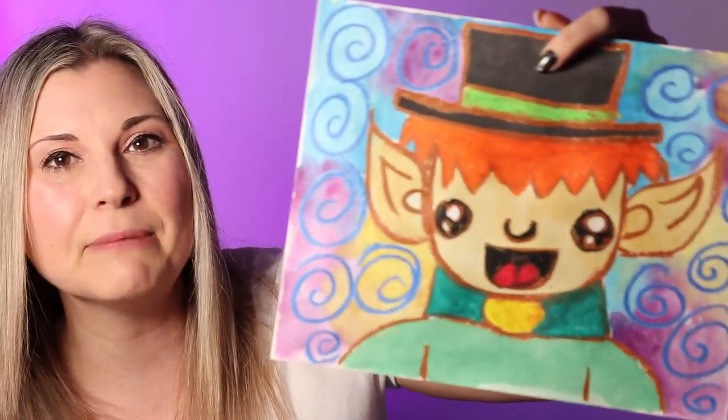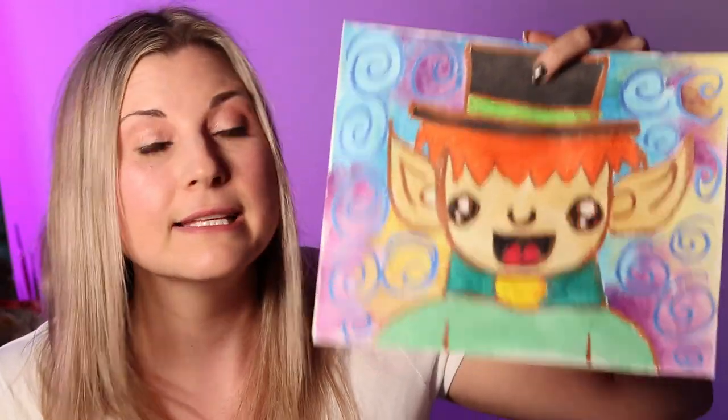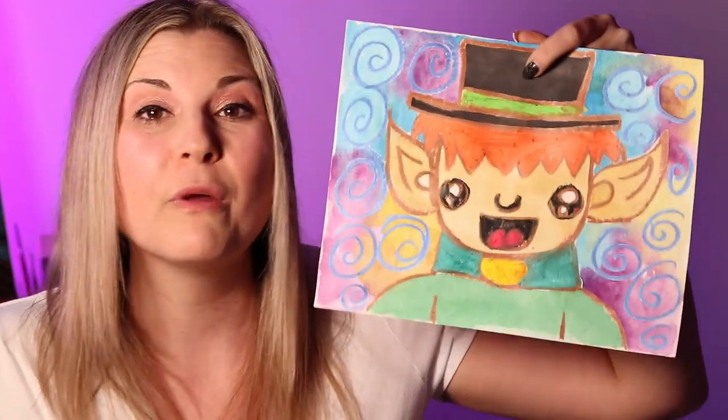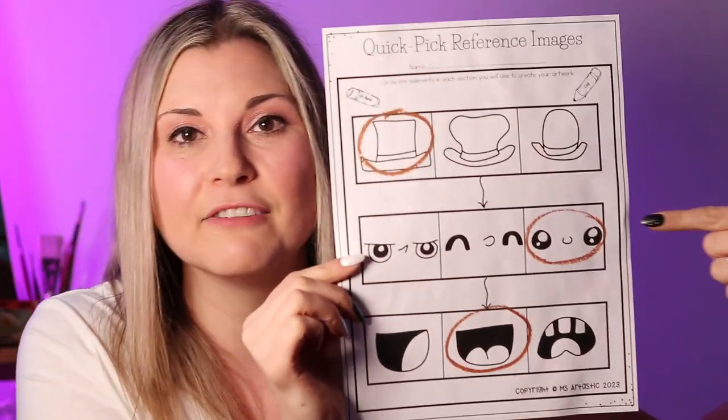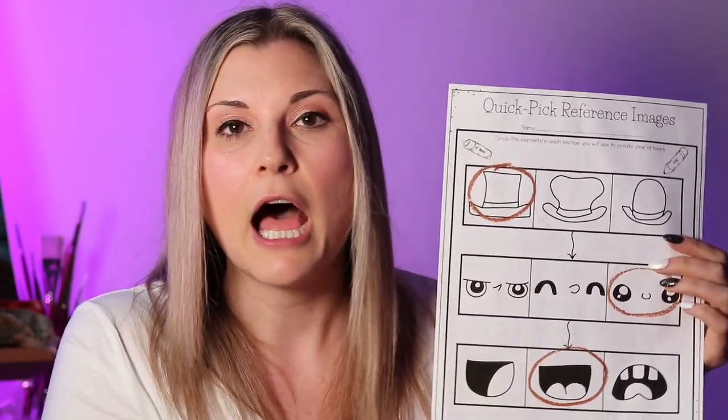I like to make a quick reference sheet so students can pick different styles. For this art idea, we're doing a leprechaun. I did mine in oil pastel and watercolor paint — drawing and coloring with the oil pastels, then painting over with watercolor for a mixed media effect, since oil pastels are great at resisting paint. There's a pick sheet where they can choose from different styles of hats, eyes, and mouths to make it their own unique creation.